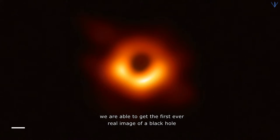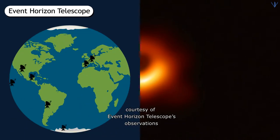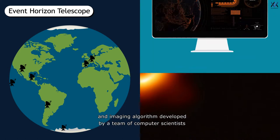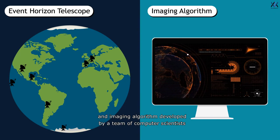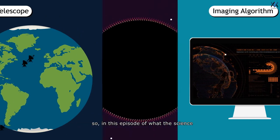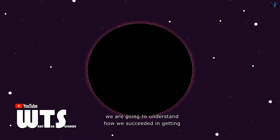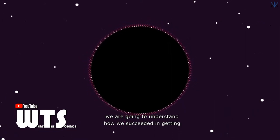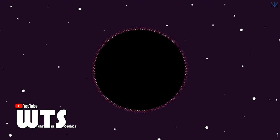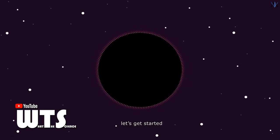But finally, we are able to get the first ever real image of a black hole, courtesy of Event Horizon Telescope's observations and imaging algorithm developed by a team of computer scientists. So in this episode of What the Science, we are going to understand how we succeeded in getting the very first image of a black hole. So without any further ado, let's get started.